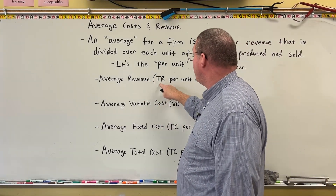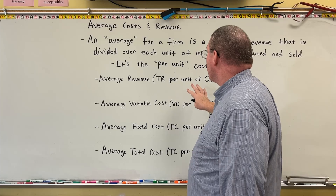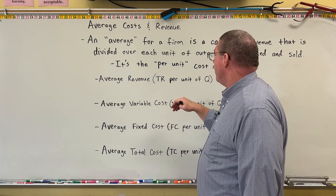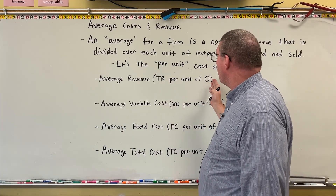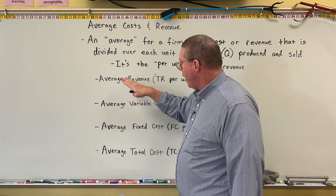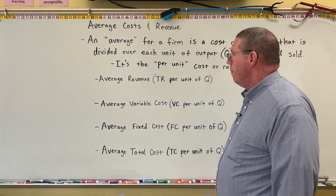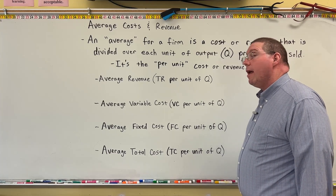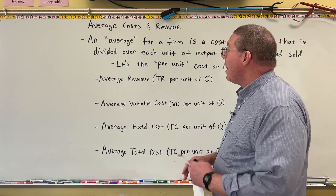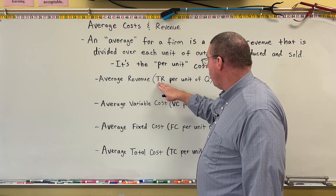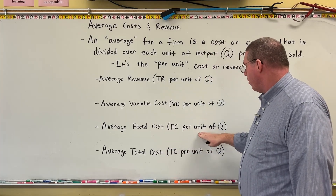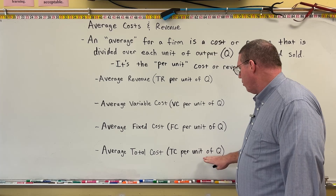Average revenue is the total revenue per unit of quantity — how much revenue each unit contributes to total revenue. You may have already figured this out. Average variable cost is the variable cost per unit of quantity. Average fixed cost is the fixed cost per unit of quantity. Average total cost is the total cost per unit of quantity.